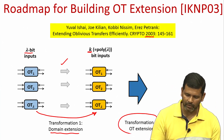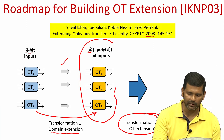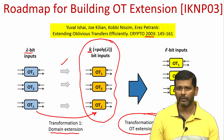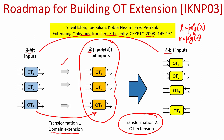The actual OT extension protocol — which is transformation 2 — is to take these lambda number of OT instances with k-bit inputs and transform them into the effect of k number of OT instances where the sender's inputs are now l bits long, where l is some polynomial function of the security parameter. Since k is also a polynomial function of the security parameter, we have transformed lambda OT instances into k OT instances with l-bit inputs.